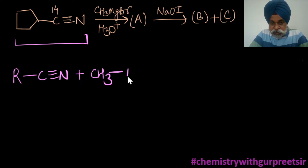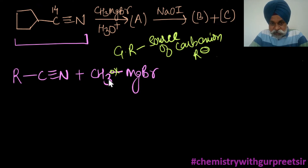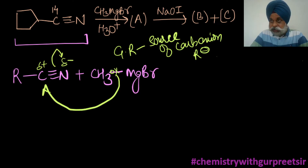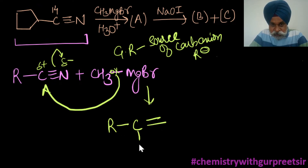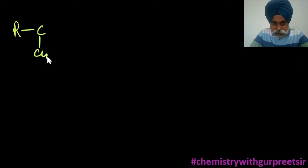If cyanide is treated with RMgCl — methyl magnesium bromide, which is a Grignard reagent — always remember a Grignard reagent is a source of carbanion (R negative). This would attack because the cyanide carbon is delta-positive. So R negative attacks this carbon, the triple bond opens up, and as a consequence you get CH3 attached, with N and MgBr remaining.